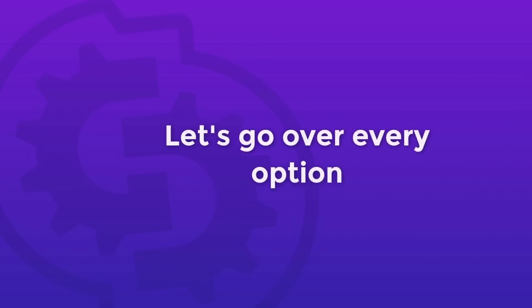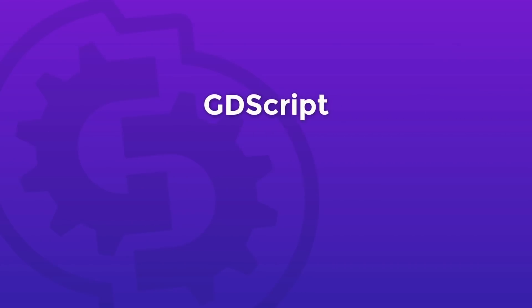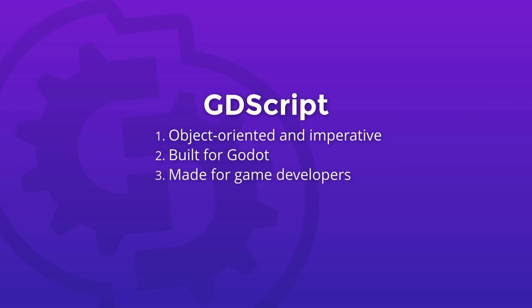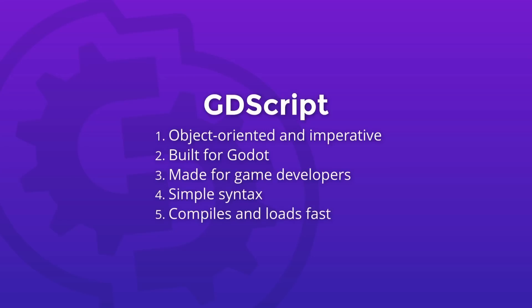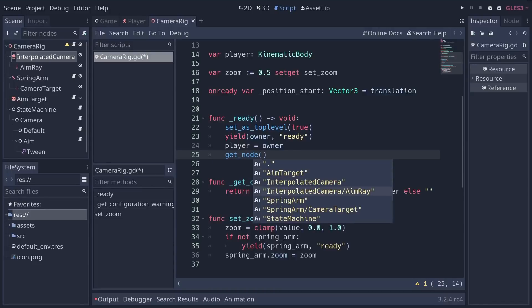GDScript is an object-oriented and imperative programming language built for Godot. It's made by and for game developers to save you time coding games. It has a simple syntax that leads to short files. It compiles and loads blazingly fast. It's tightly integrated into the editor with code completion for nodes, signals, and the scene it's part of.